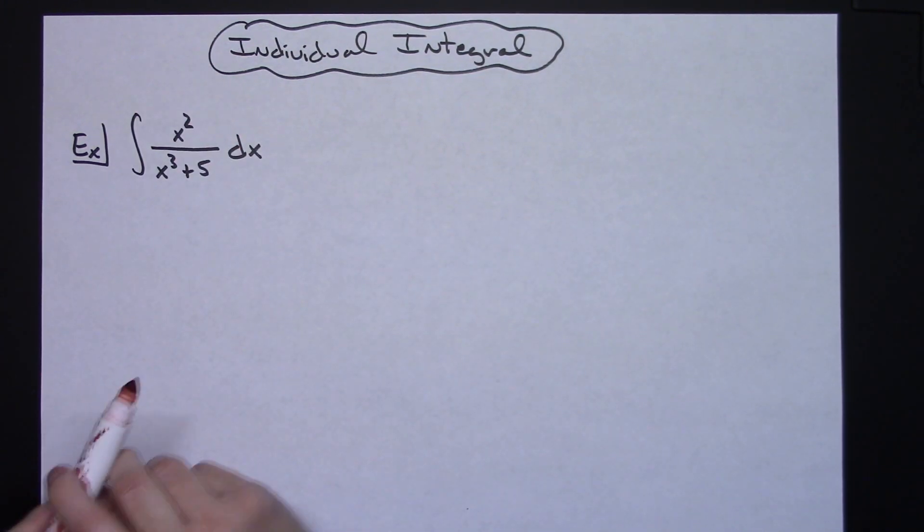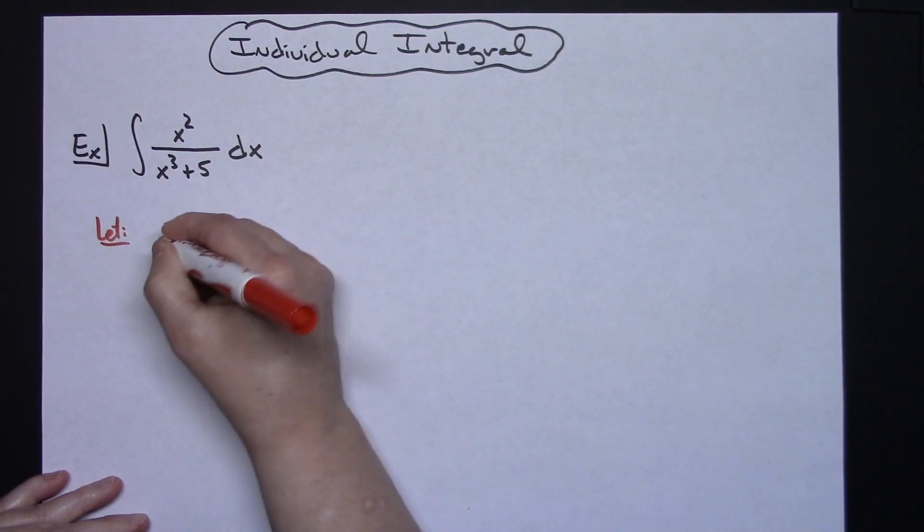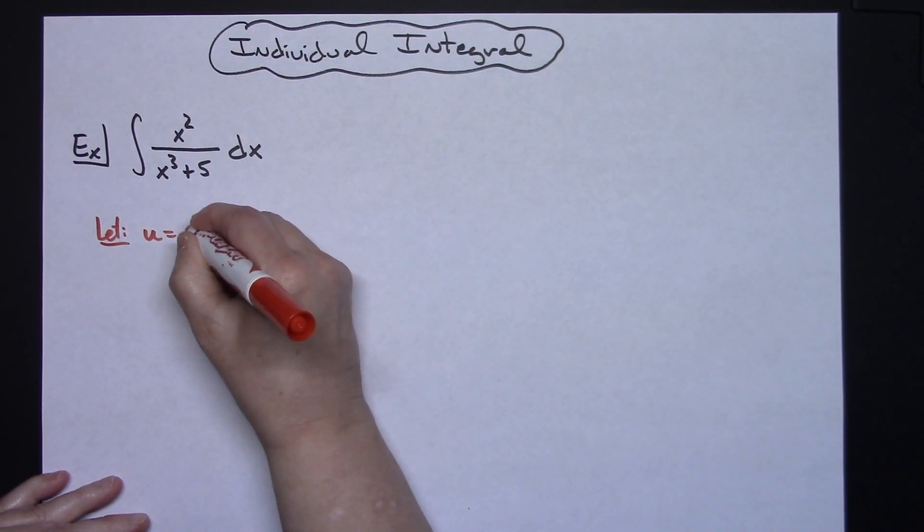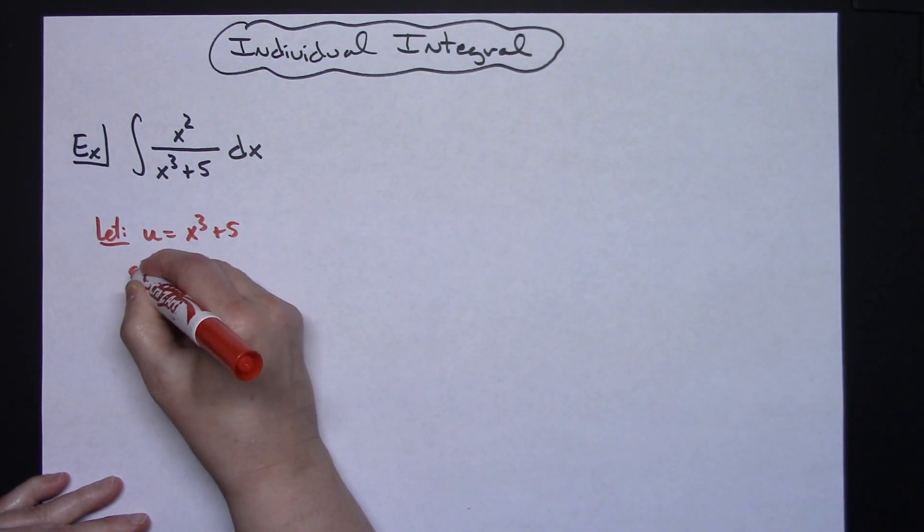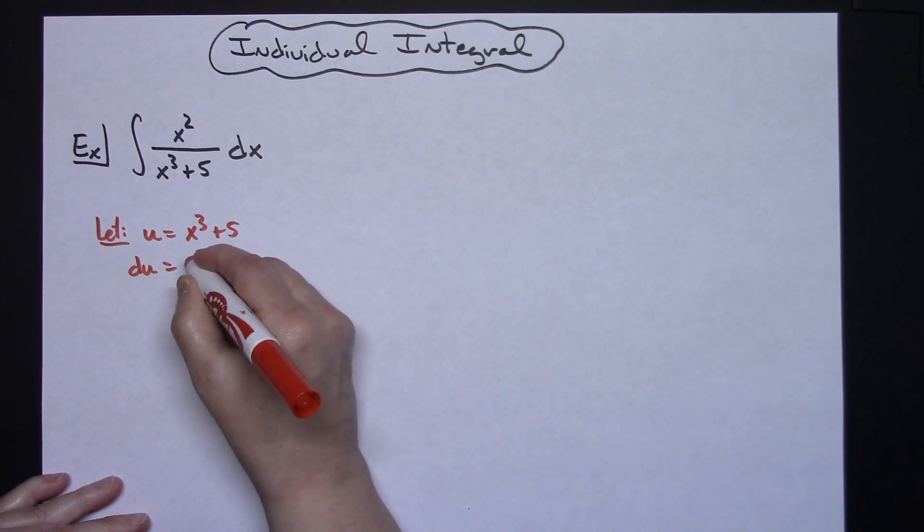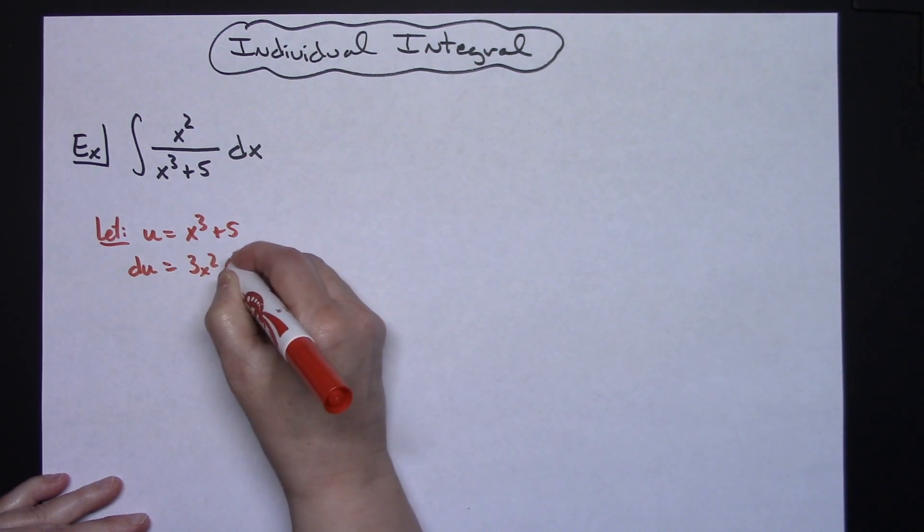So I'm going to start by letting my u equal that denominator. So u is going to be equal to x to the third plus 5. I'm going to go ahead and take the derivative of both sides. So du is equal to 3x squared dx.